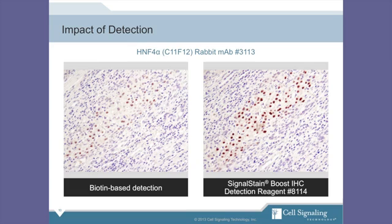Moving on to detection. Historically, we had used a biotin-based detection system, but more recently we switched to Signal Stain Boost, a one-step polymer-based reagent. This has allowed for stronger signals, as seen here with the HNF4-alpha antibody. Additionally, with Boost being one step, there is a time savings, and in that it is a polymer-based reagent, there are no issues with endogenous biotin that can be so problematic when dealing with tissues like liver and kidney.